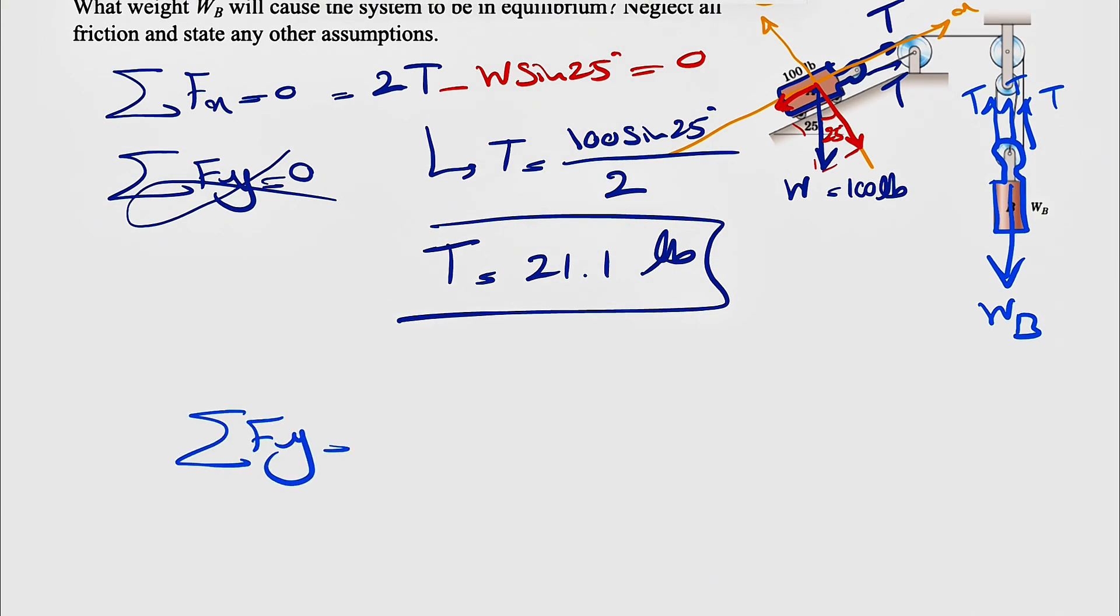And we're just going to do sum of all forces in Y equals zero. Let's just call our X and Y for here, maybe in this direction. We can use whatever X and Y that we want to use in here. So we basically have 3T minus W_B equals 0.